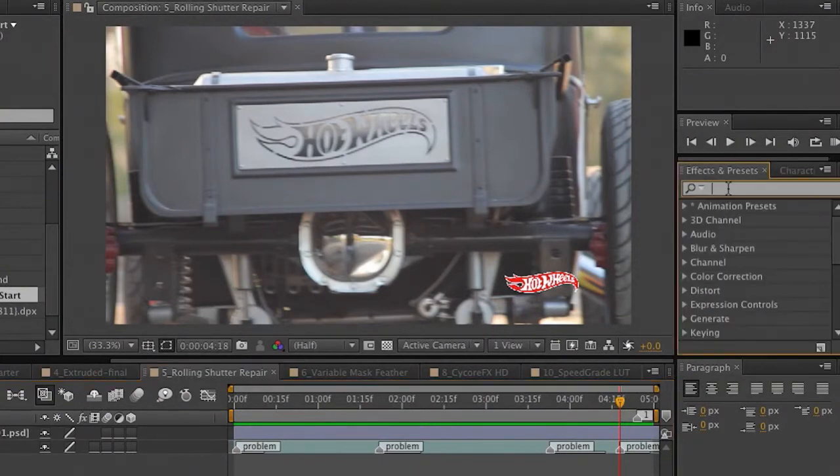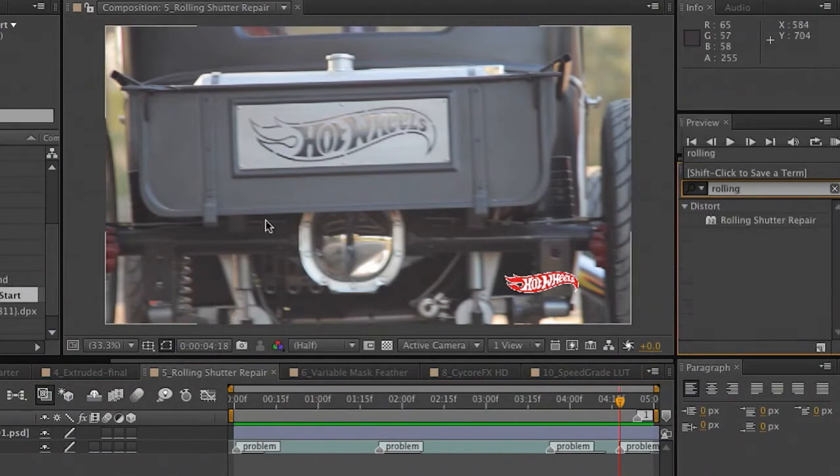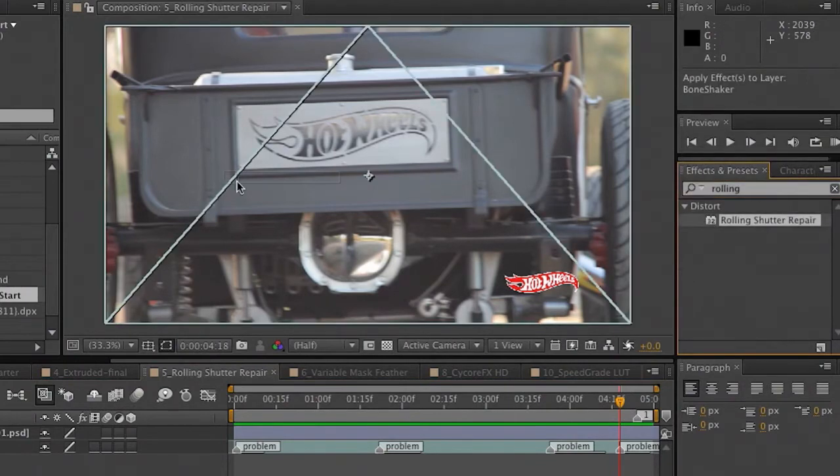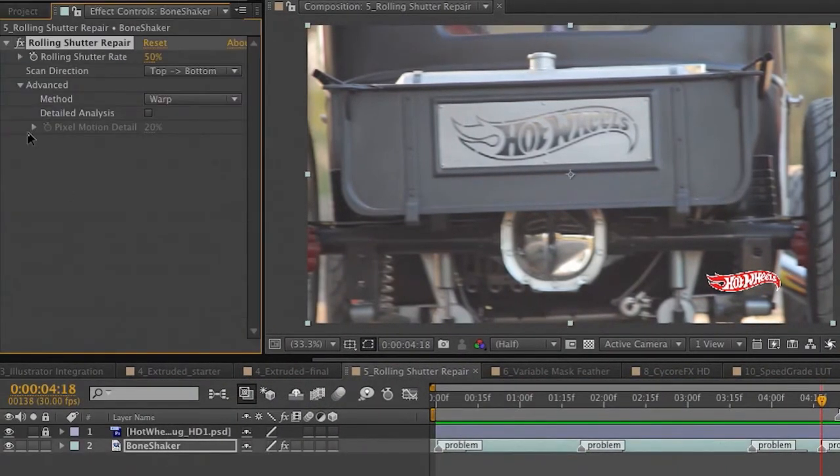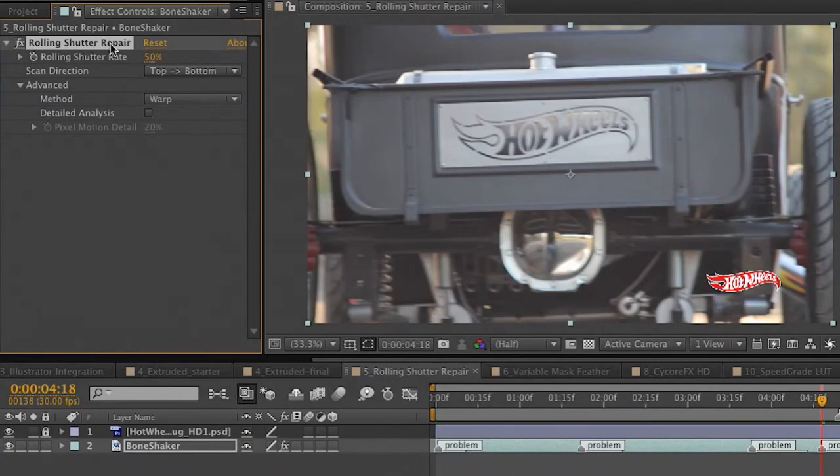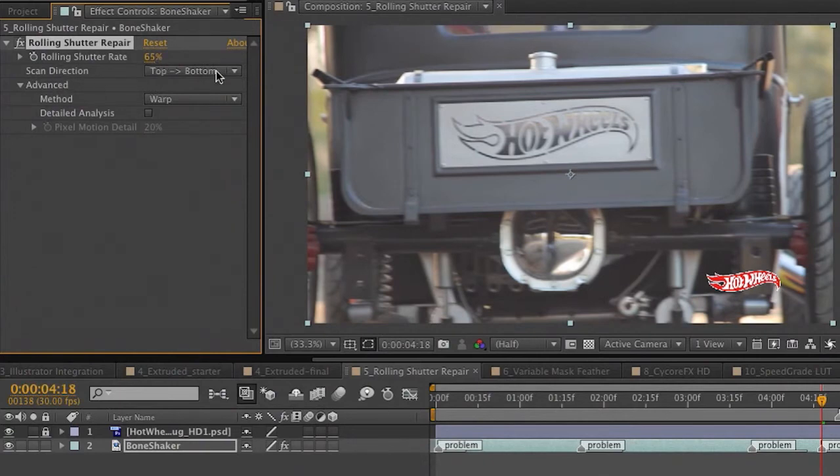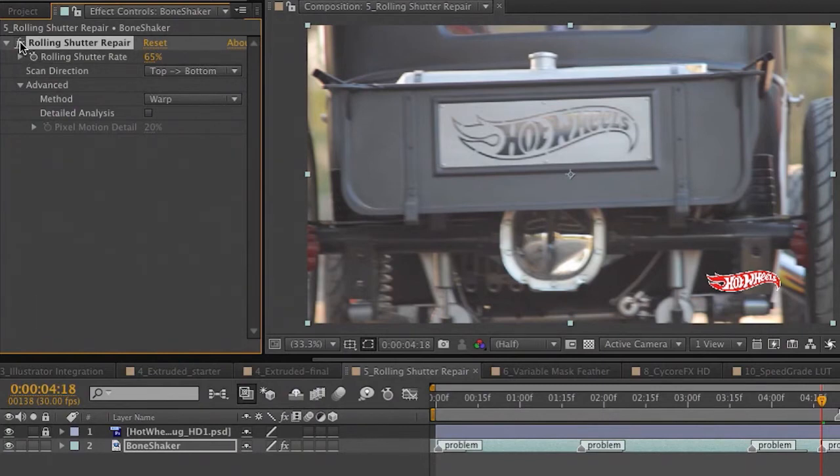So again, making it very easy for you, I can go to effects and presets, rolling shutter, drag and drop right on our footage, go into our effects controls here, readjust our rolling shutter rate. Let's just take this to around 62%. You've got options here for scan direction, different methods. So here is the before, little skewed, here's the after, repaired.